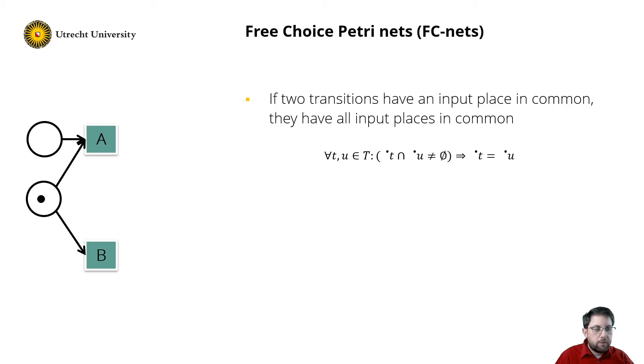The free choice property now requires that transition B has its place as input as well. In other words, the choice between firing transition A or transition B should not be hampered by other tokens, hence the name free choice.